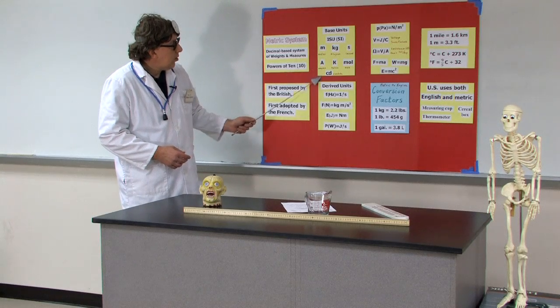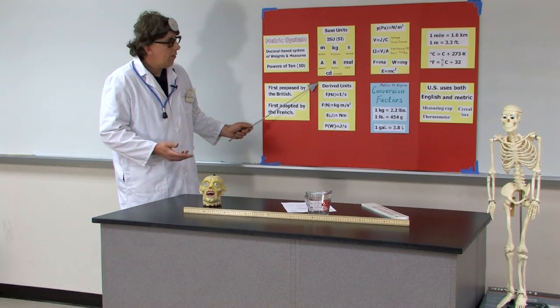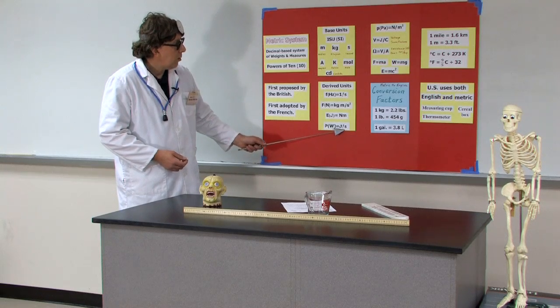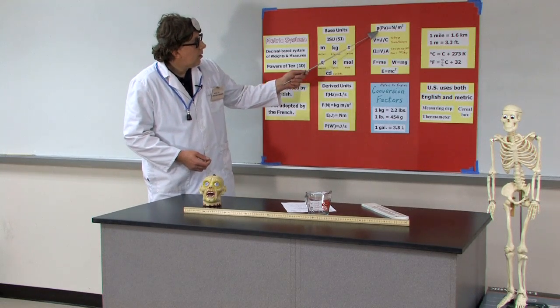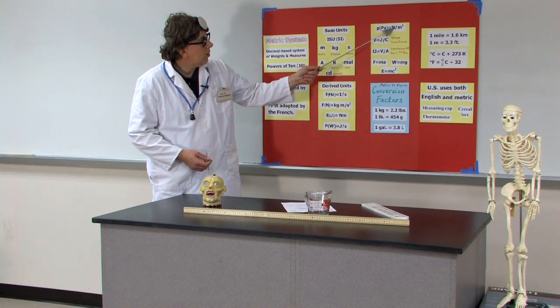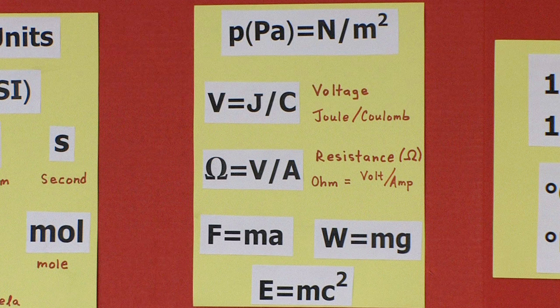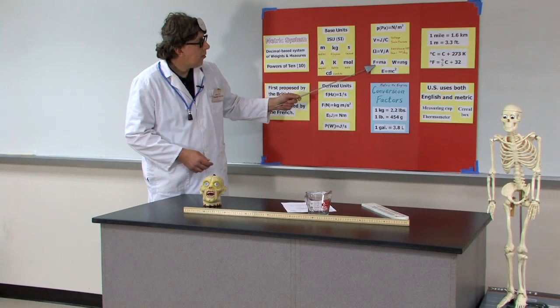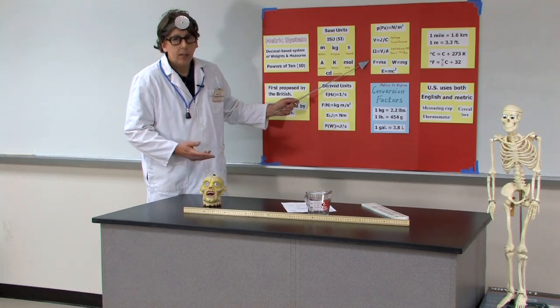From these base units you derive a variety of what are called derived units. Frequency is one over seconds. Force is measured in newtons. Energy is measured in joules. Power is measured in watts — a watt is a joule per second. Moving over here, we've got pressure measured in pascals; pressure is a force, newton per meter squared. We have voltage, a joule per coulomb. Measurement of resistance, or ohms, would be volts divided by amps. This is based on Ohm's law.